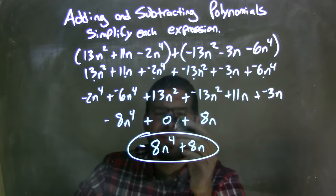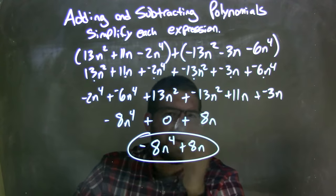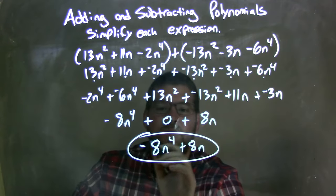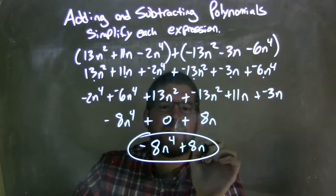And then from there, I don't need to add a zero because that's silly. We can just eliminate it. It's the additive identity. It doesn't change anything. So our final answer here is just negative 8n to the fourth plus an 8n.